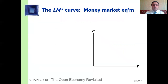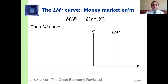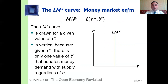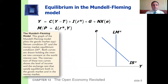The LM curve represents money market equilibrium. The LM curve is drawn for a given value of the world interest rate, and it is vertical because there is only one value of output that equates money demand with supply, regardless of the exchange rate. This graph of the Mundell-Fleming model plots goods market and money market equilibrium conditions, both curves held at the world interest rate. The intersection shows the level of income and exchange rate that satisfies equilibrium in both markets.